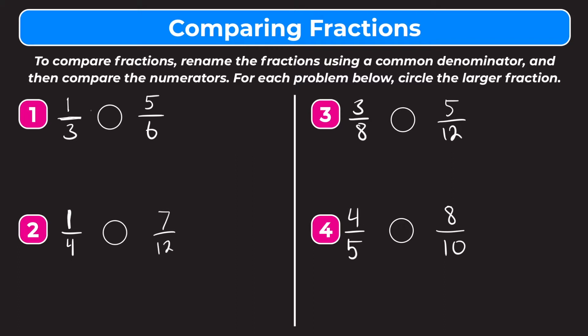So let's try number one. As you can see, one-third and five-sixths do not have the same denominator, so we're going to have to rename these using a common denominator and then compare the numerators. The common denominator between one-third and five-sixths is six, so we can rewrite one-third by multiplying the numerator and the denominator by two. Remember, whatever you do to the numerator of a fraction, you also have to do to the denominator in order to keep it equal. So we get one times two is two on top, and three times two is six.